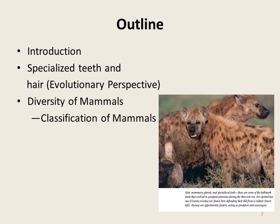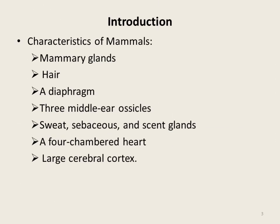If we talk particularly about the characteristic features of mammals, they are characterized by the presence of mammary glands, hair on their skin, a diaphragm, and three middle ear ossicles — three tiny bones in the middle ear. They also possess sweat-producing, sebum-producing, and scent-producing glands, a four-chambered heart, and a large cerebral cortex.